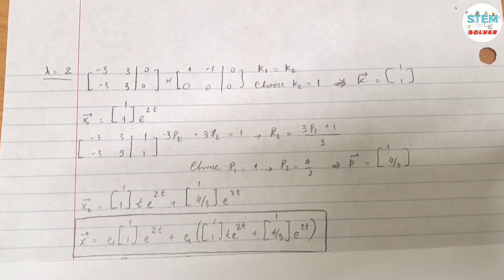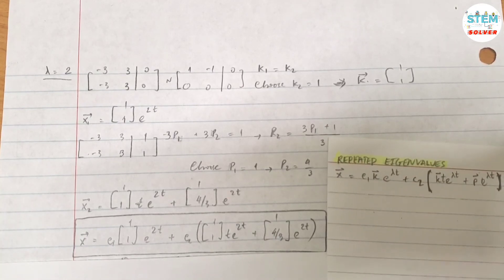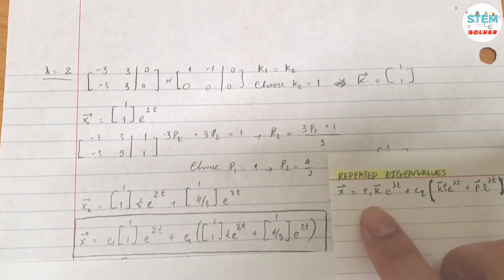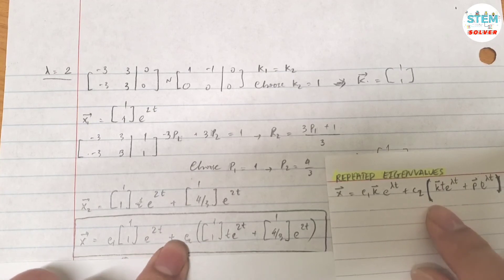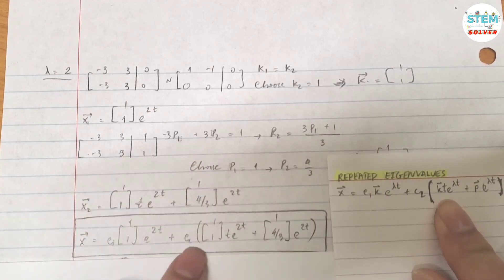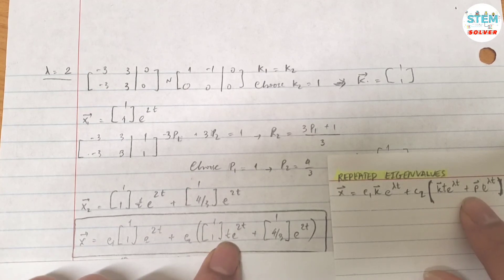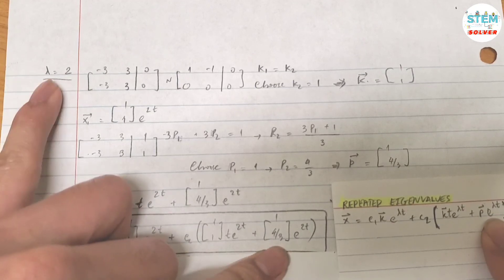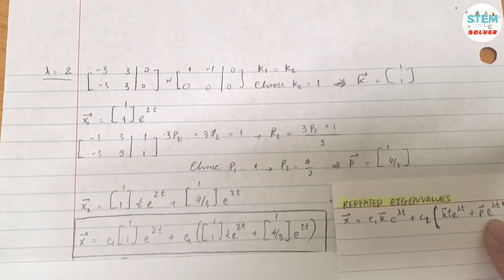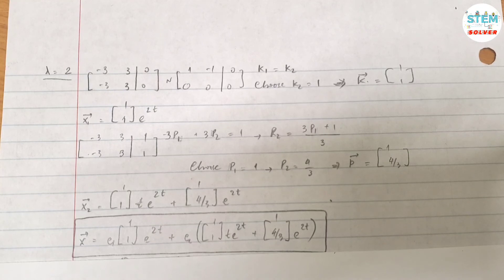Because you have repeated eigenvalues, your final answer will be: x = c1 vector k [1, 1] e^(λt), which is e^(2t) since λ = 2, plus c2 times (vector k [1, 1] e^(2t) plus vector p [1, 4/3] times e^(2t)). That's it.